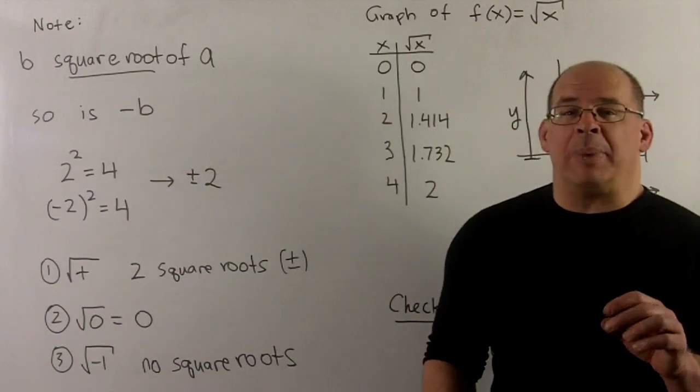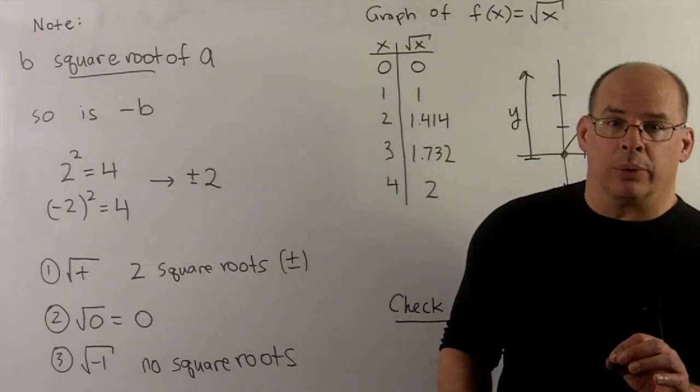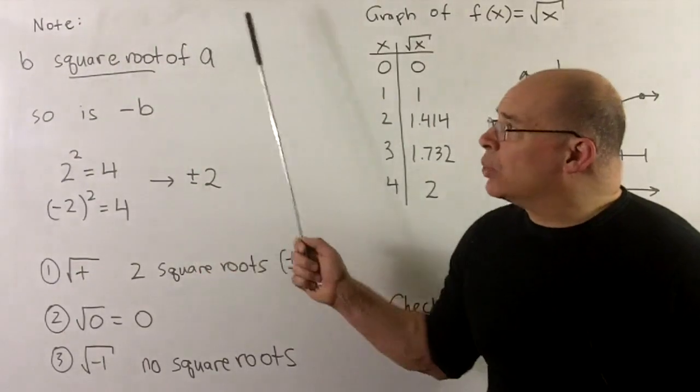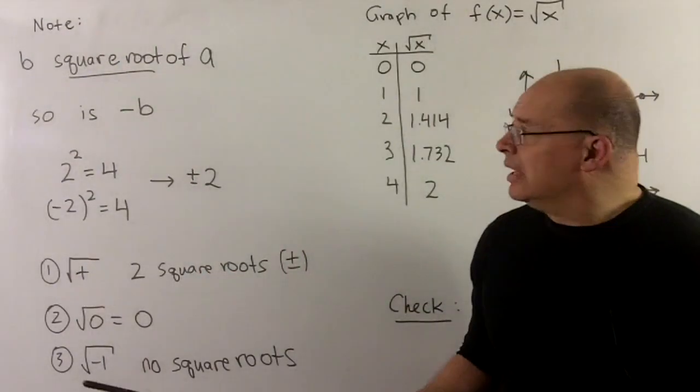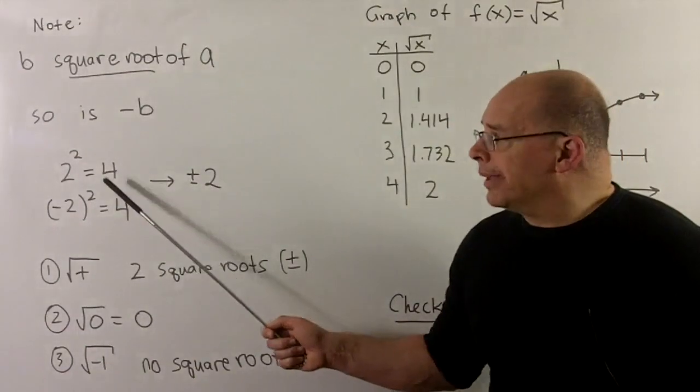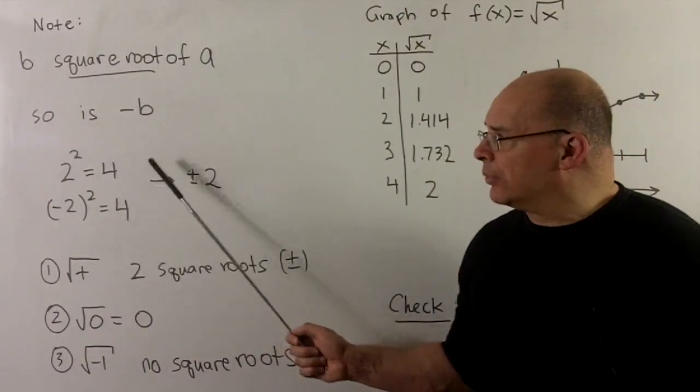Now, let's get back to the general notion of square root. We see b is the square root of a, then so is minus b. For instance, if we take the square root of four, we'll get a two because two squared is equal to four.